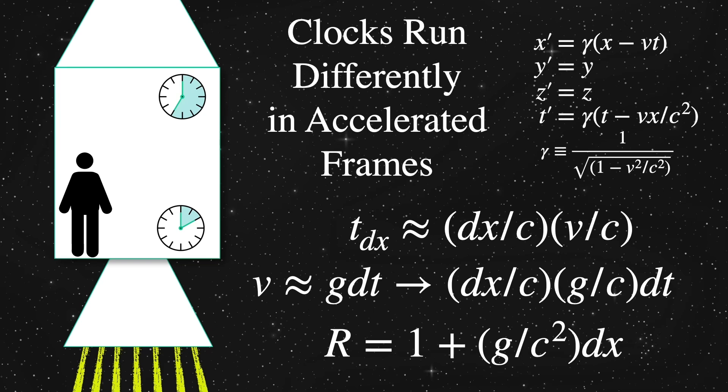Now we take into account the acceleration g, which would change the speed by g times dt. Here, dt is a little change in the clock on the floor. This makes the clock at the position a little bit higher to be ahead by dx over c times g over c times dt.